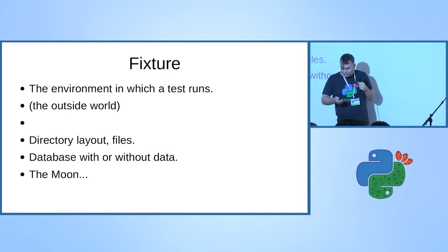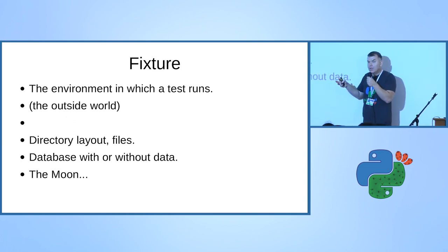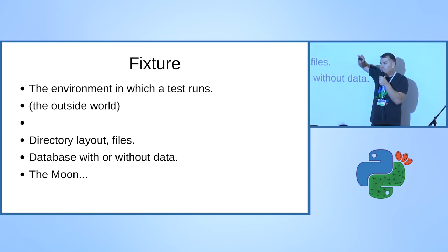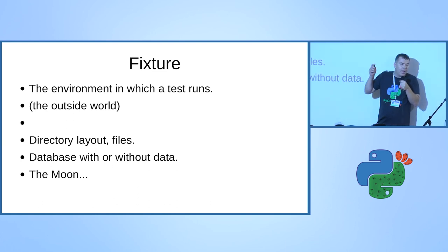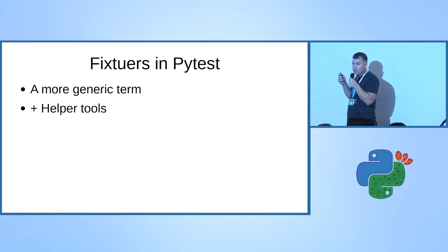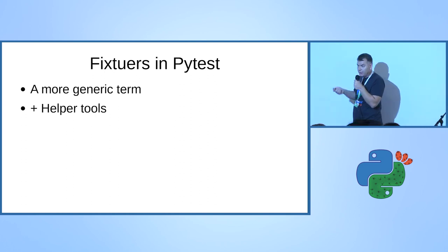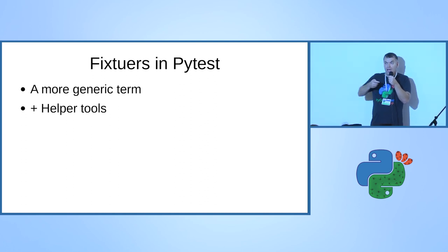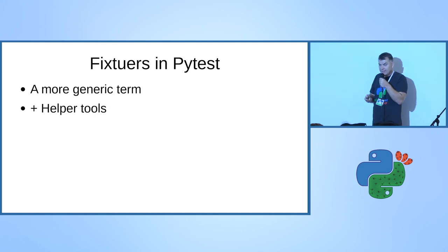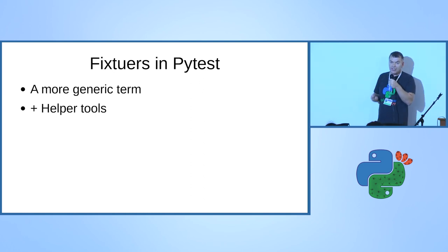Let's go to fixtures. In the testing world, 'fixture' describes all the environment you need in order to run your test - everything from the file system, a database, external connections. It's the same with the space program: the moon is the fixture. In PyTest, the word fixture is used for something more: both for setting up and maintaining the external environment, and also for other things that help you check whether a test was successful or failed.